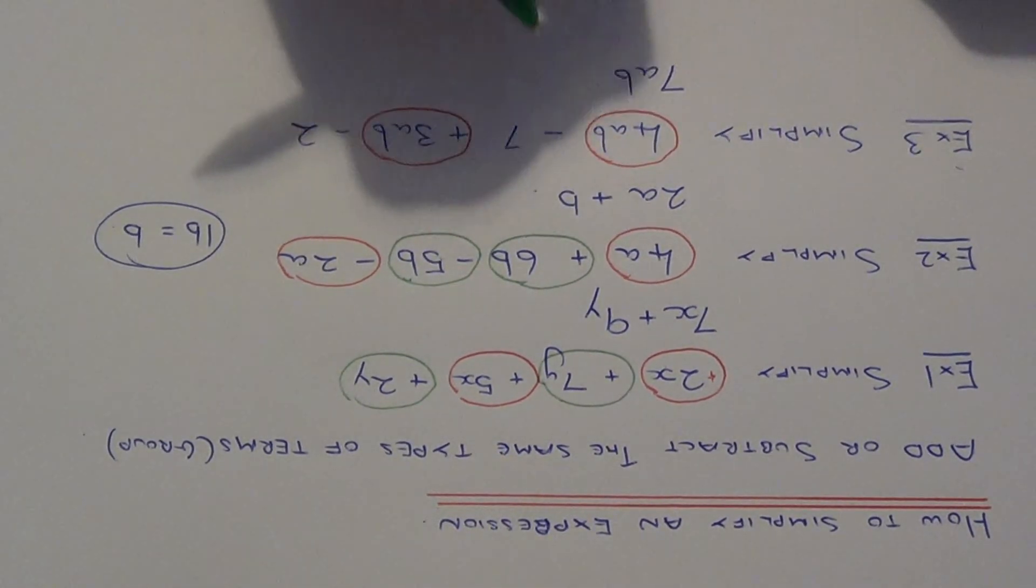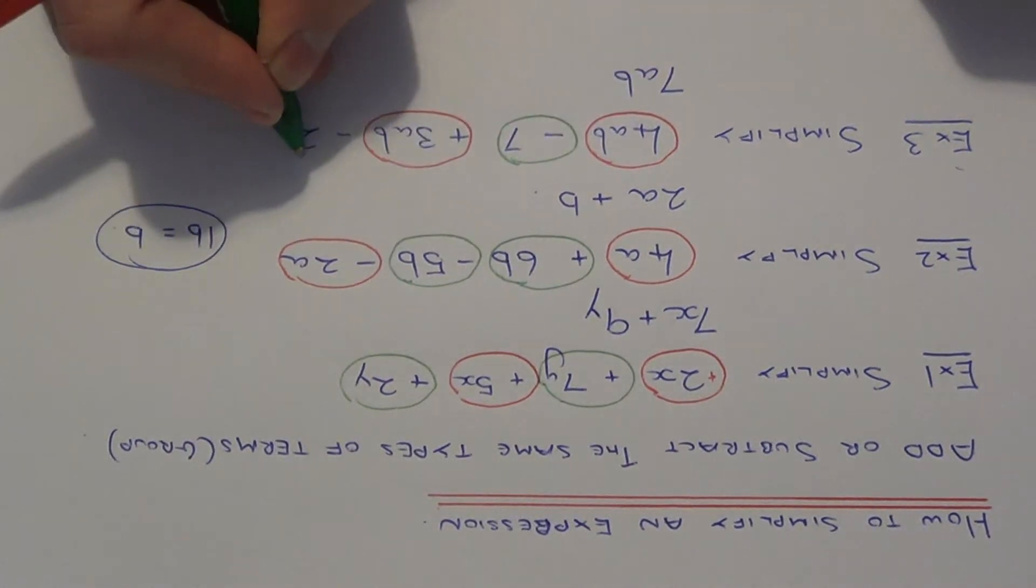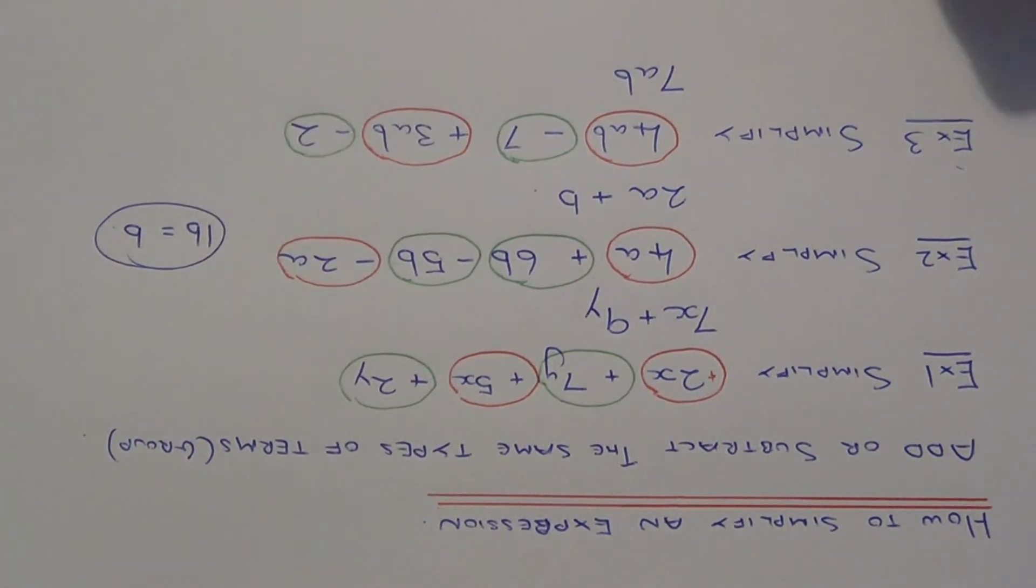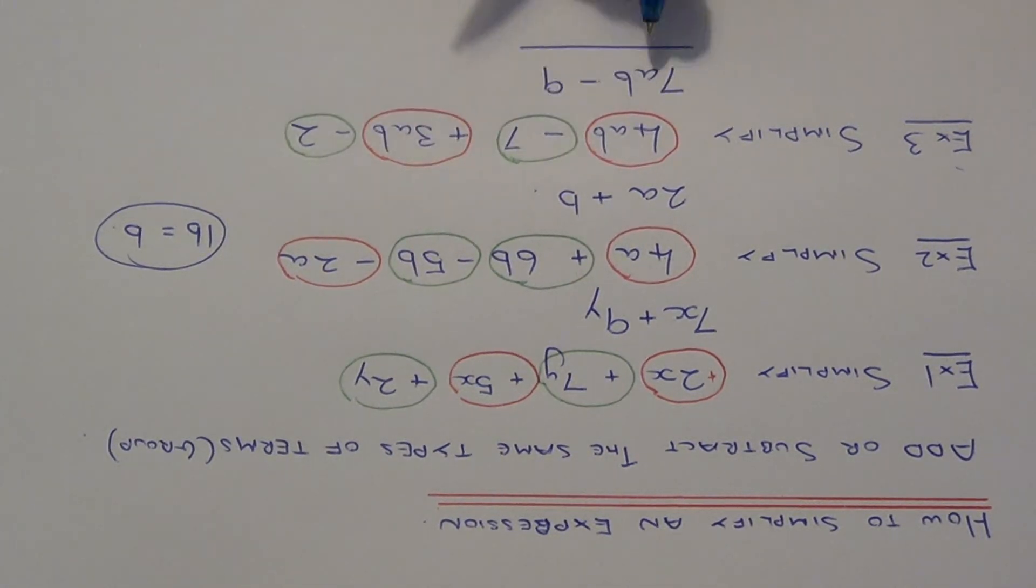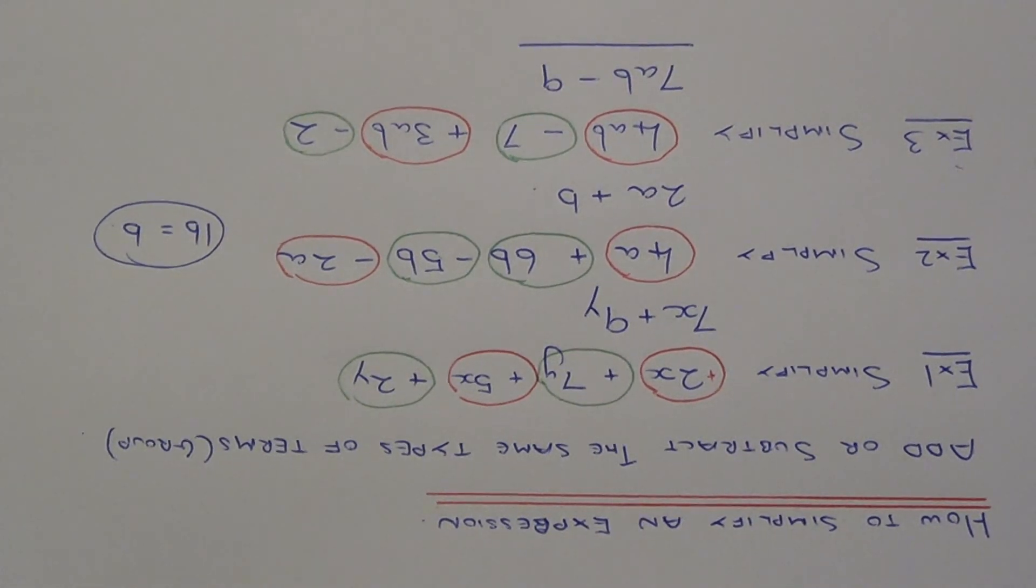And our number terms, we've just got minus 7 take away 2. So minus 7 take away 2. Be careful which way you go with your negative numbers. So minus 7 take away 2 is minus 9. And again this cannot be simplified any further. So the final answer is 7ab minus 9.